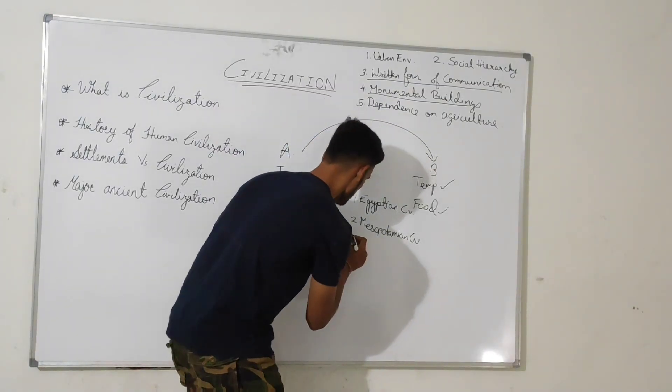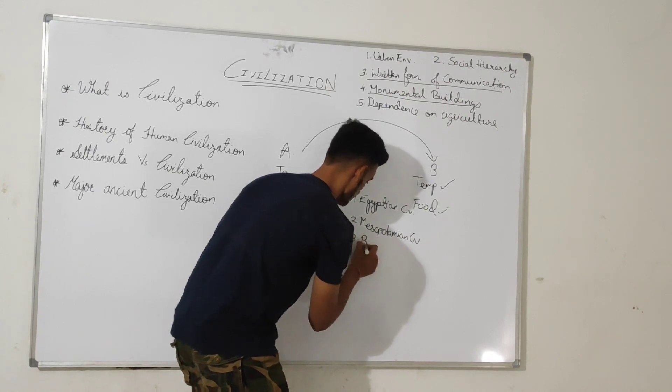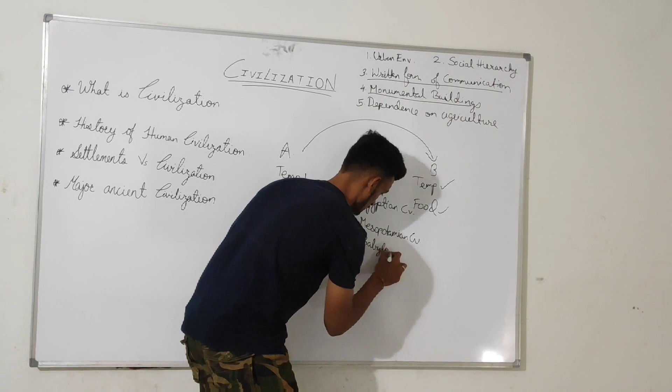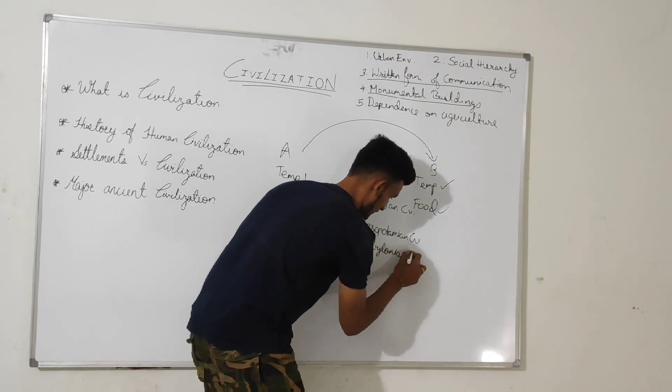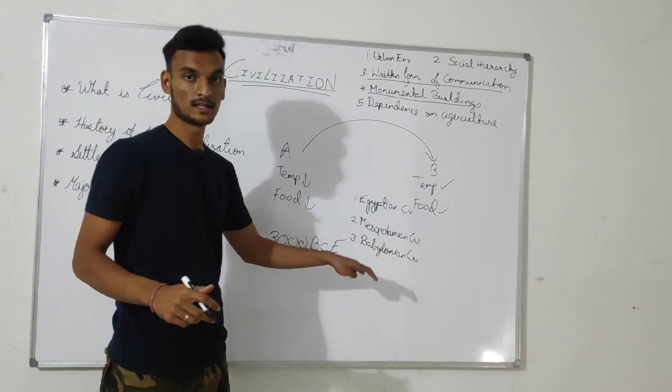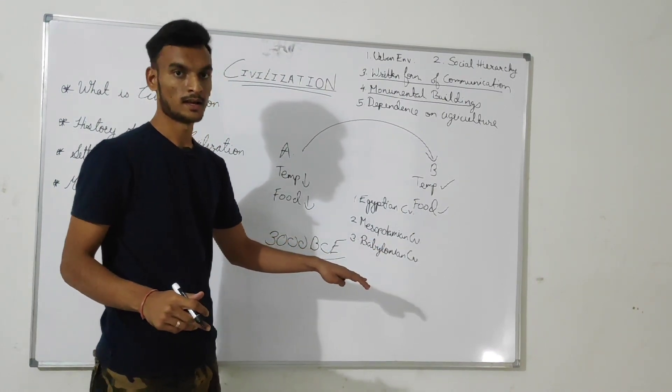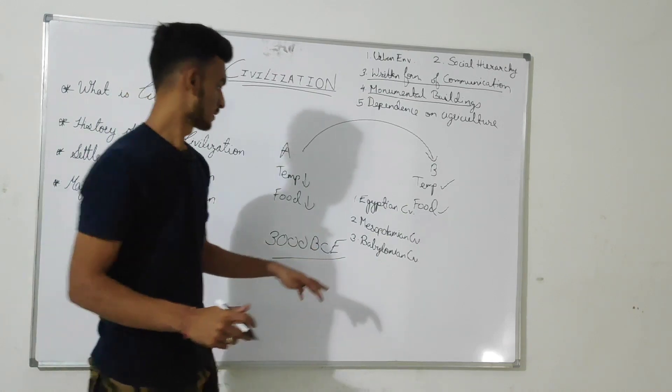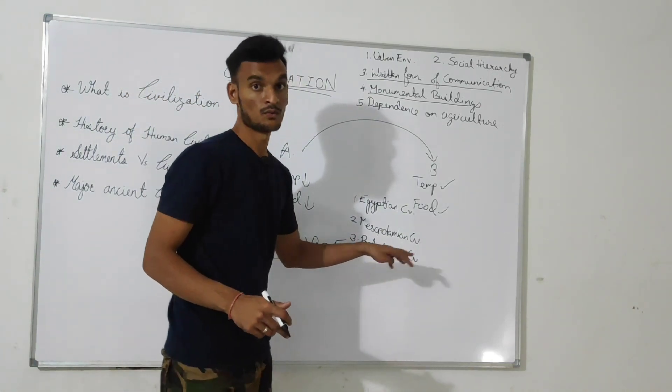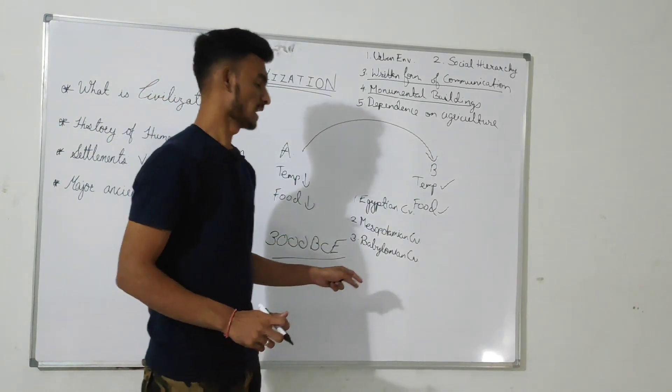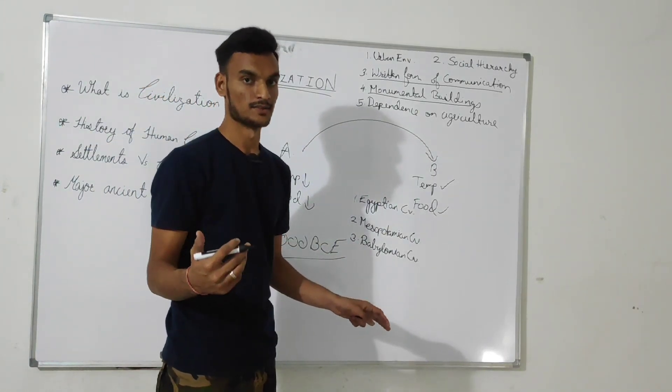Third is Babylonian civilization. This civilization was found in a region called Babylon. And Babylon is found in today's Iraq. Babylon was known for its wealth in those times and was also famous for its hanging gardens.